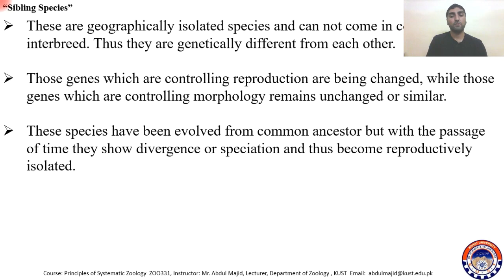These species have evolved from a common ancestor. Sibling species are monophyletic — they are from a common ancestor — but with the passage of time they show divergence or speciation and thus become reproductively isolated. This may happen in the same geography, but most of the time it happens because of geographic isolation.